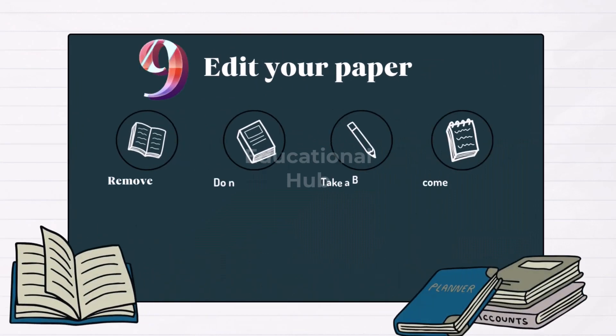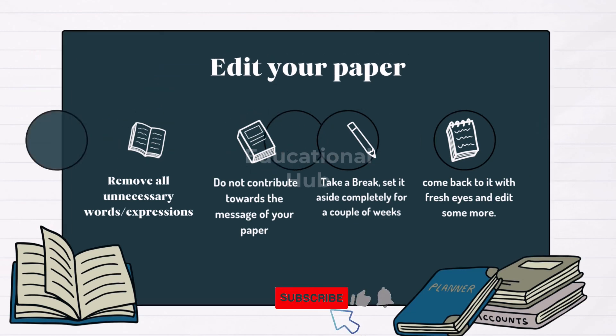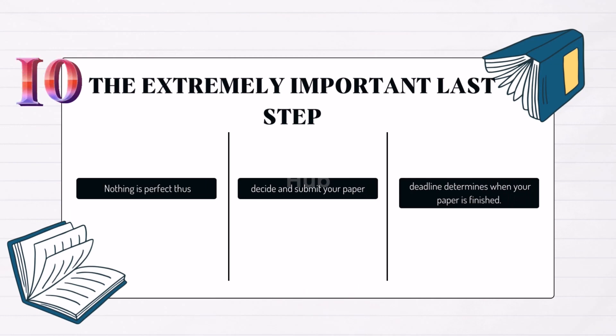Step 9: Edit your paper. Remove all unnecessary words and expressions that do not contribute towards the message of your paper. Take a break, set it aside completely for a couple of weeks, come back to it with fresh eyes and edit some more. Step 10: The extremely important last step — nothing is perfect, so decide and submit your paper. Usually, a deadline determines when your paper is finished.